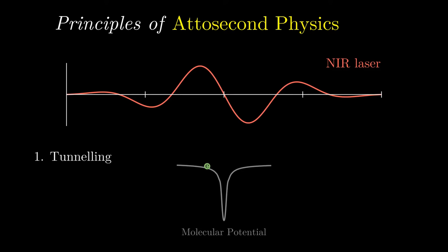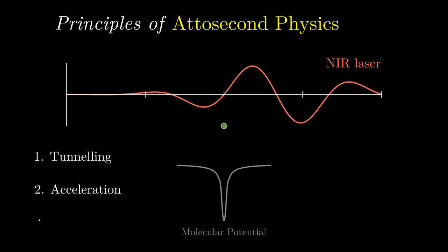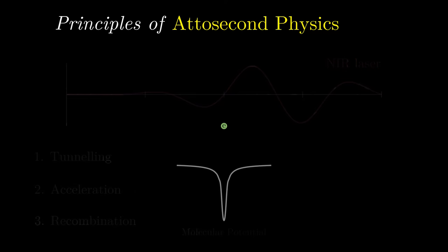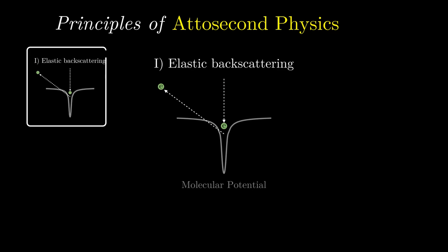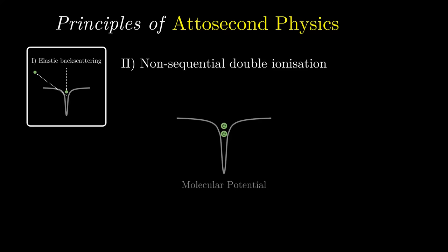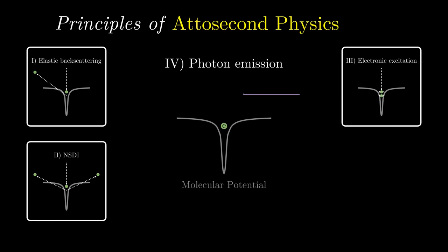The atom is now ionized and the electron in a free state. Because of its charge, the electron will be pushed away from the atom by the external electric field until its sign changes. Consequently, the electron will eventually turn back and likely recollide with its parent atom. In theory, four events can now occur. The first possibility is that the recollision kicks out another electron while the original one takes its place. Another option is that the recollision initiates non-sequential double ionization.